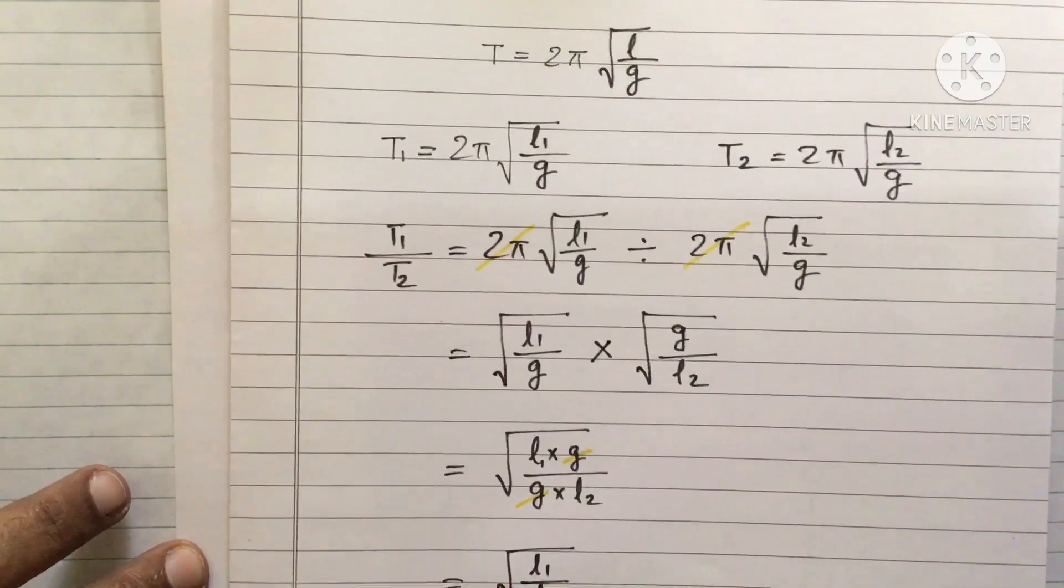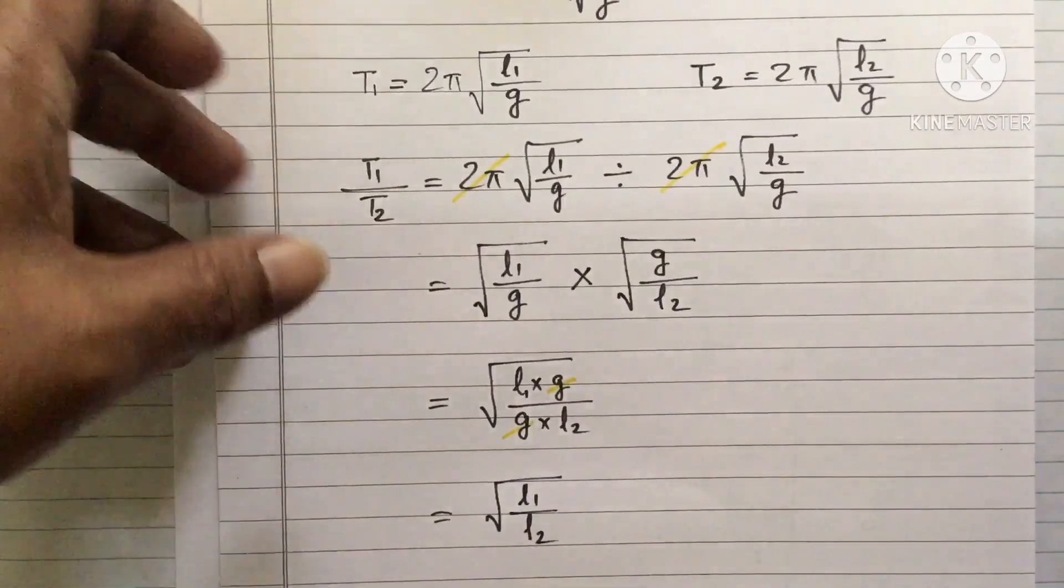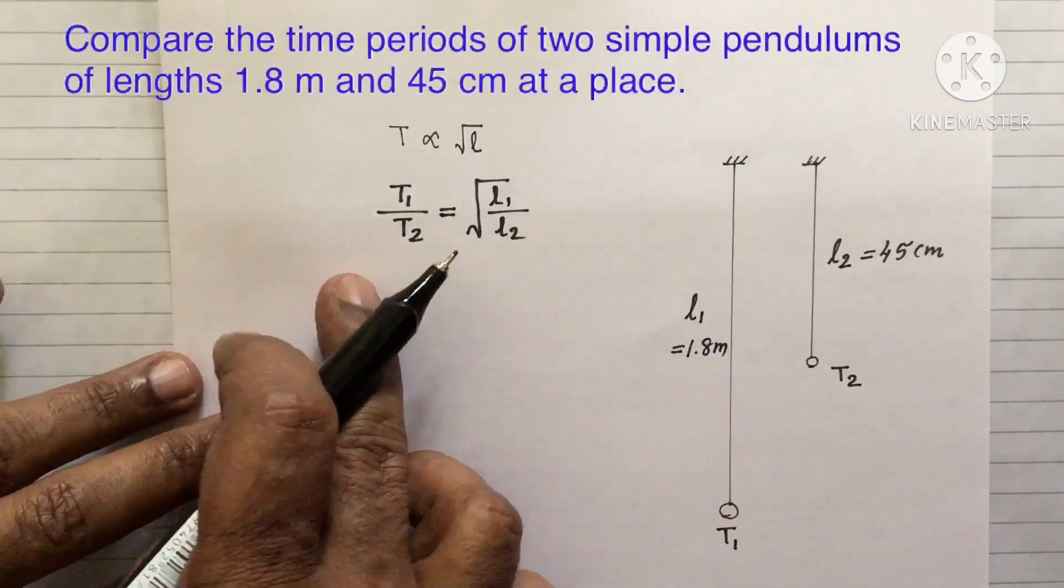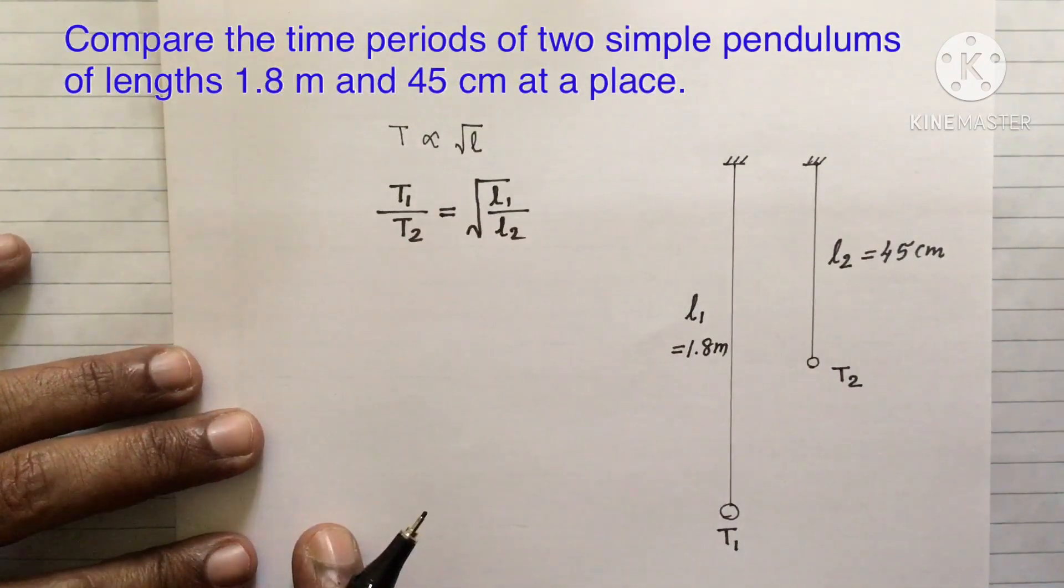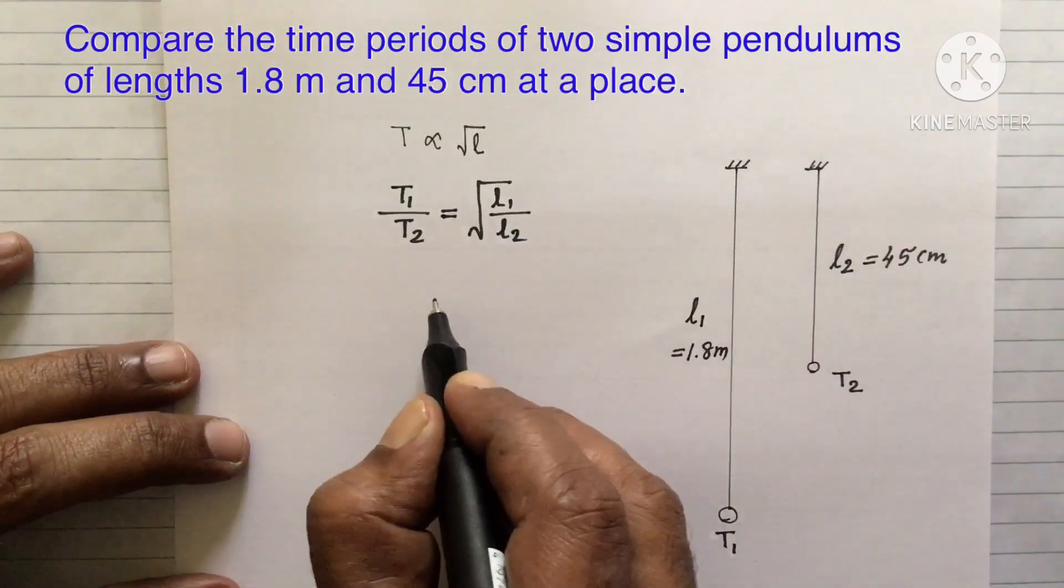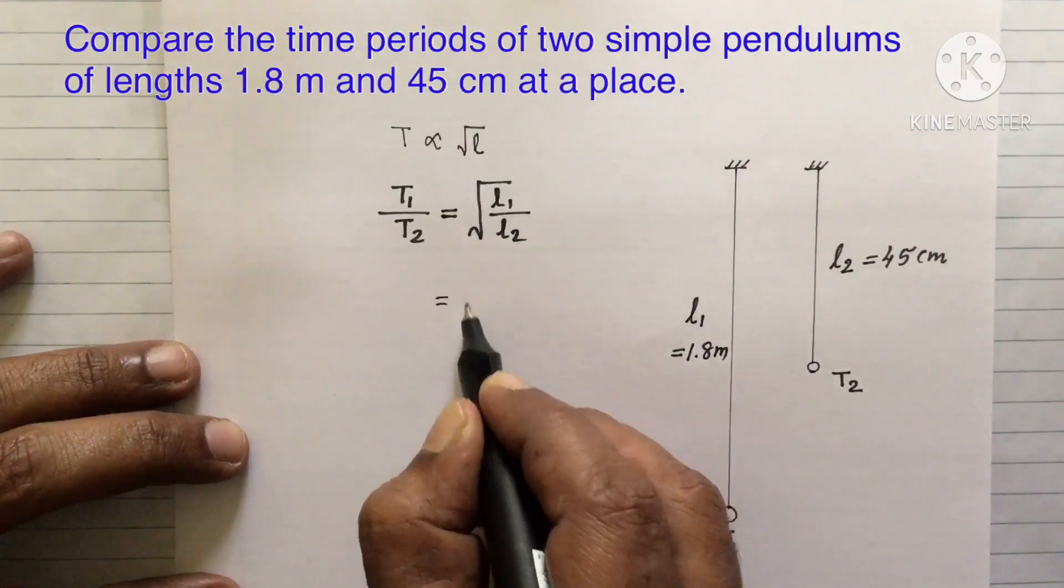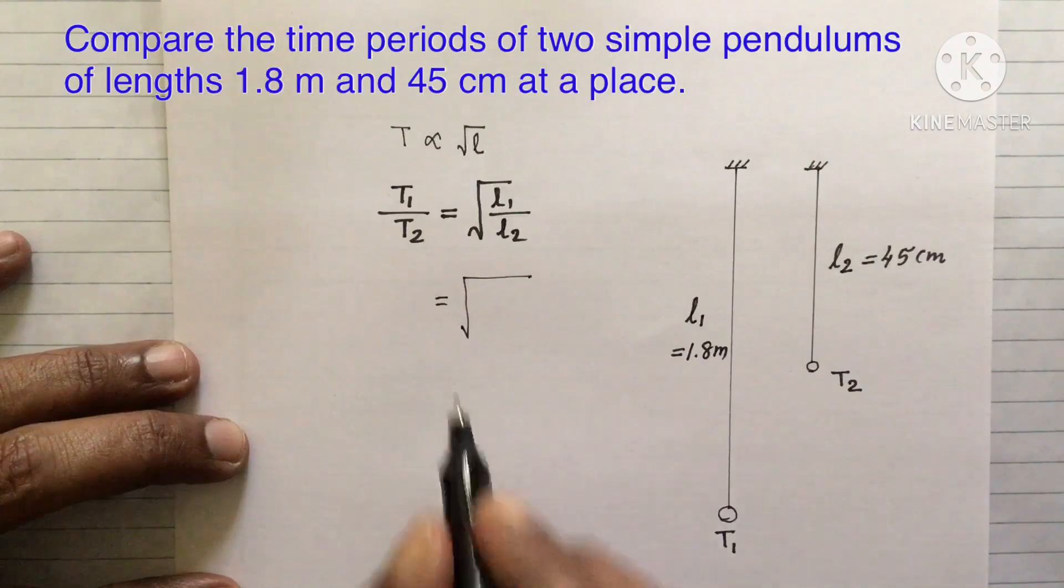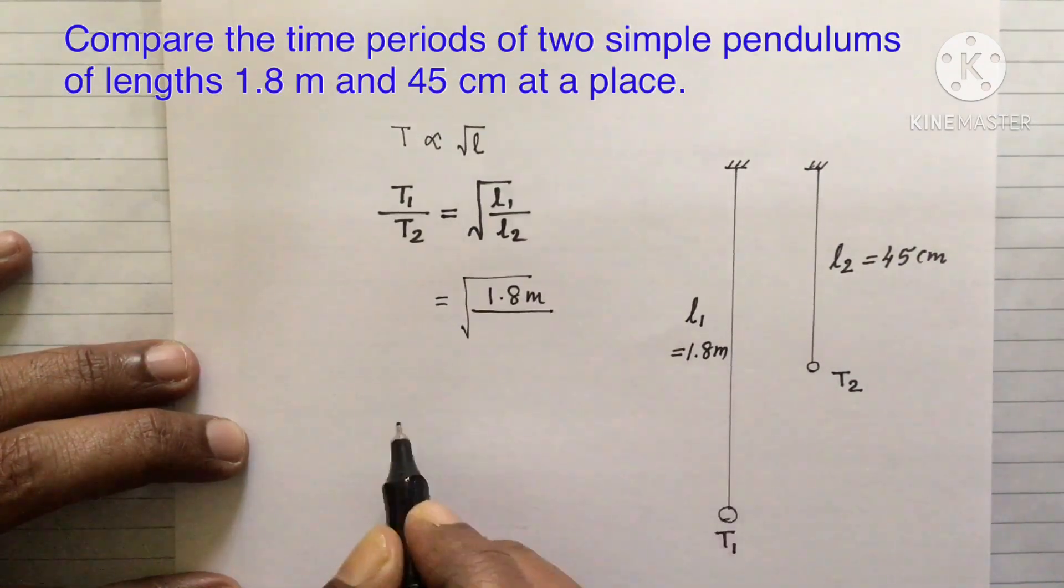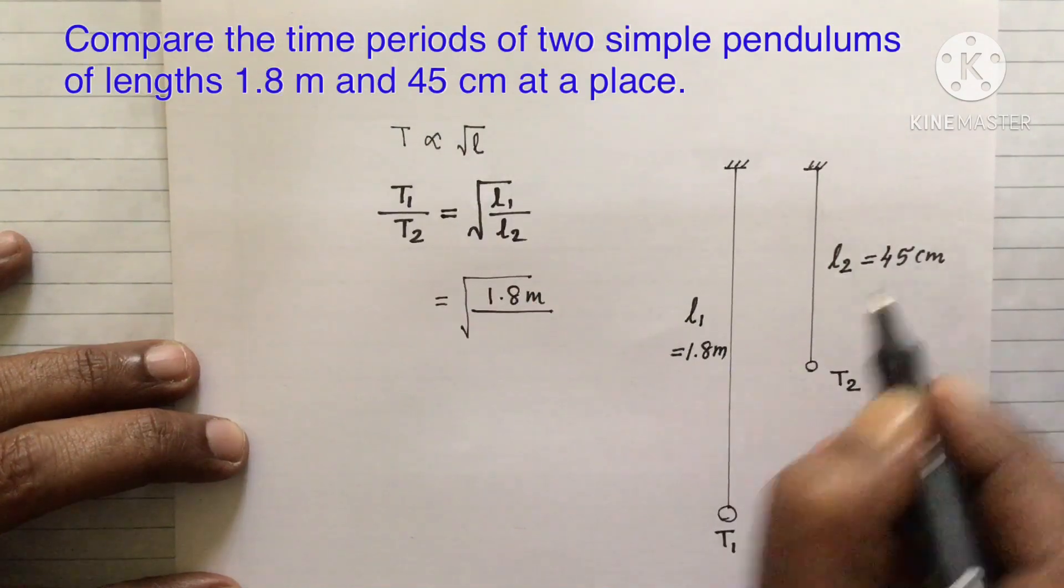This is what I have written here. T1 by T2 is equal to L1 by L2. Well, now that is equal to square root of L1. L1 is 1.8 meter divided by L2 is given as 45 centimeter.